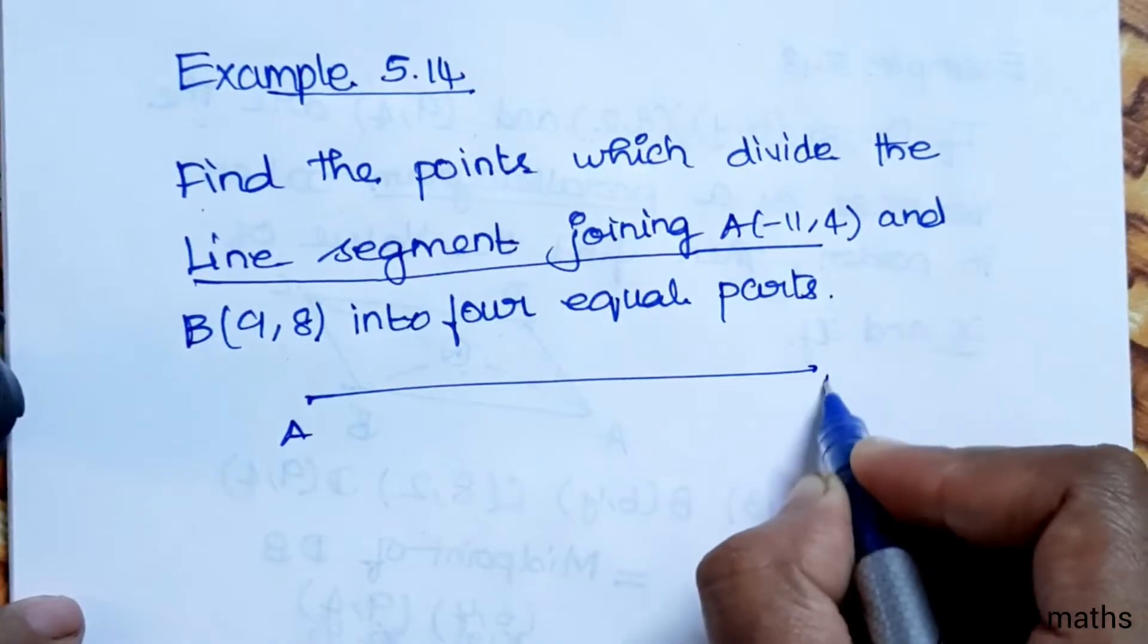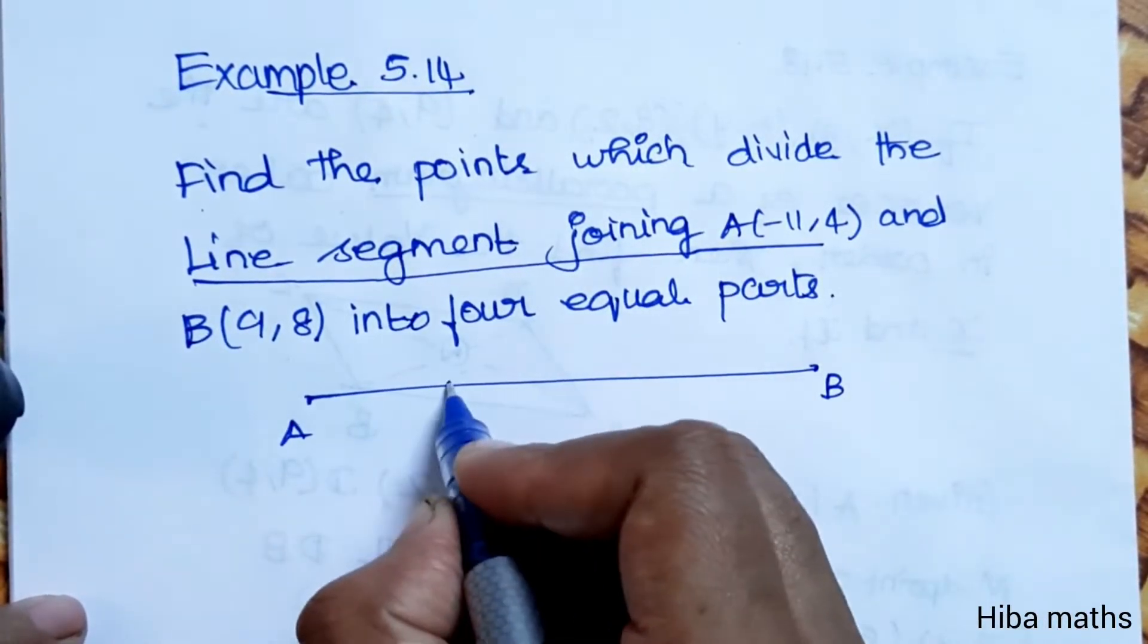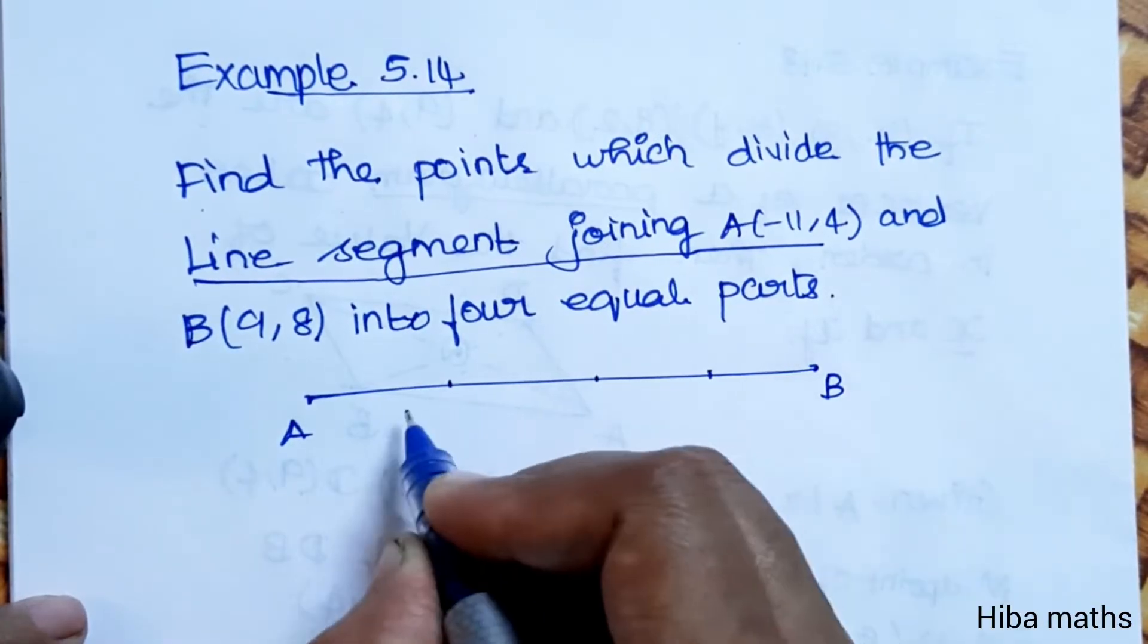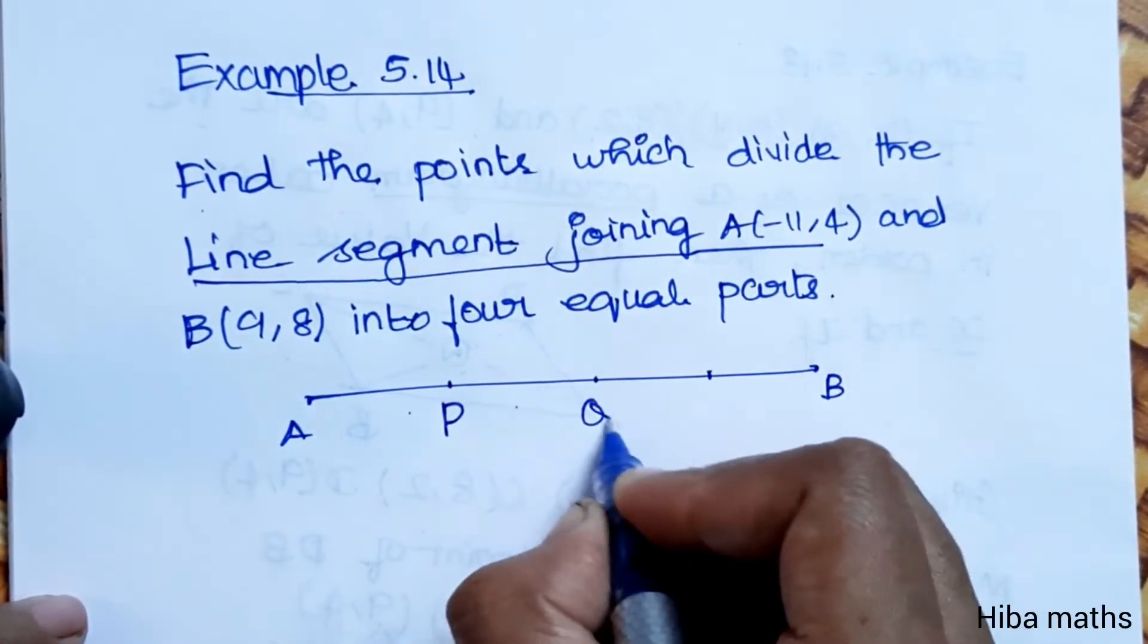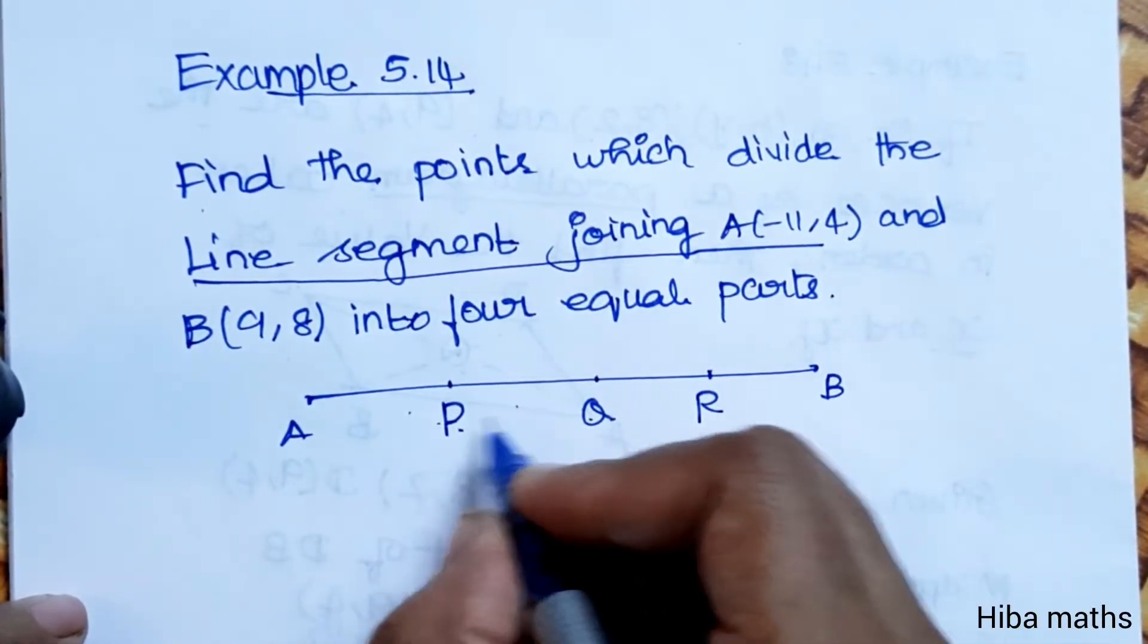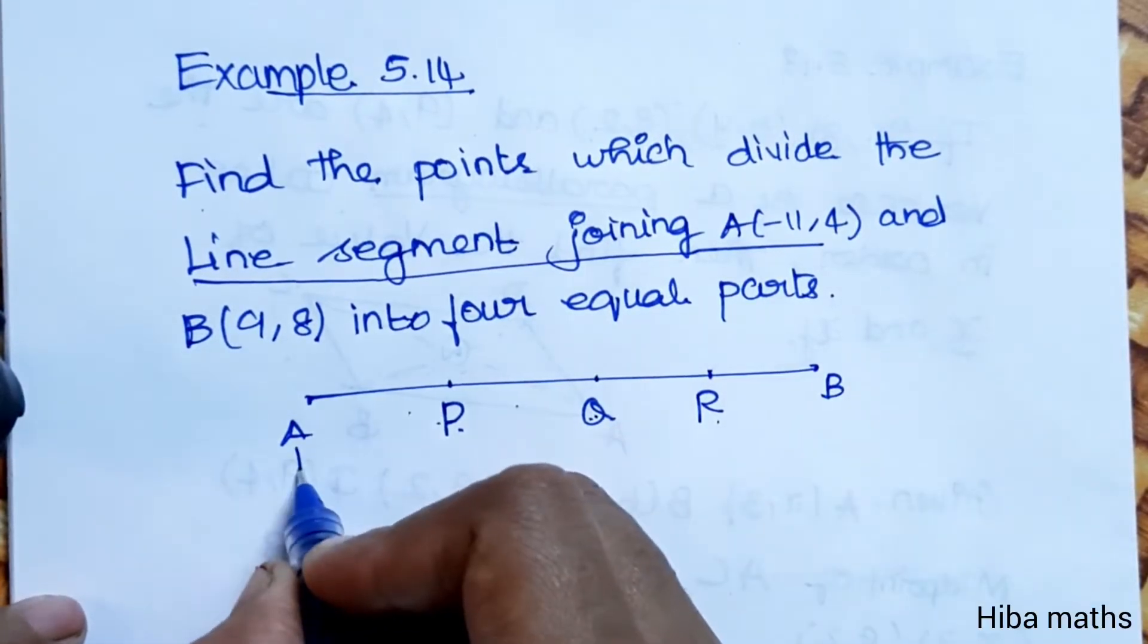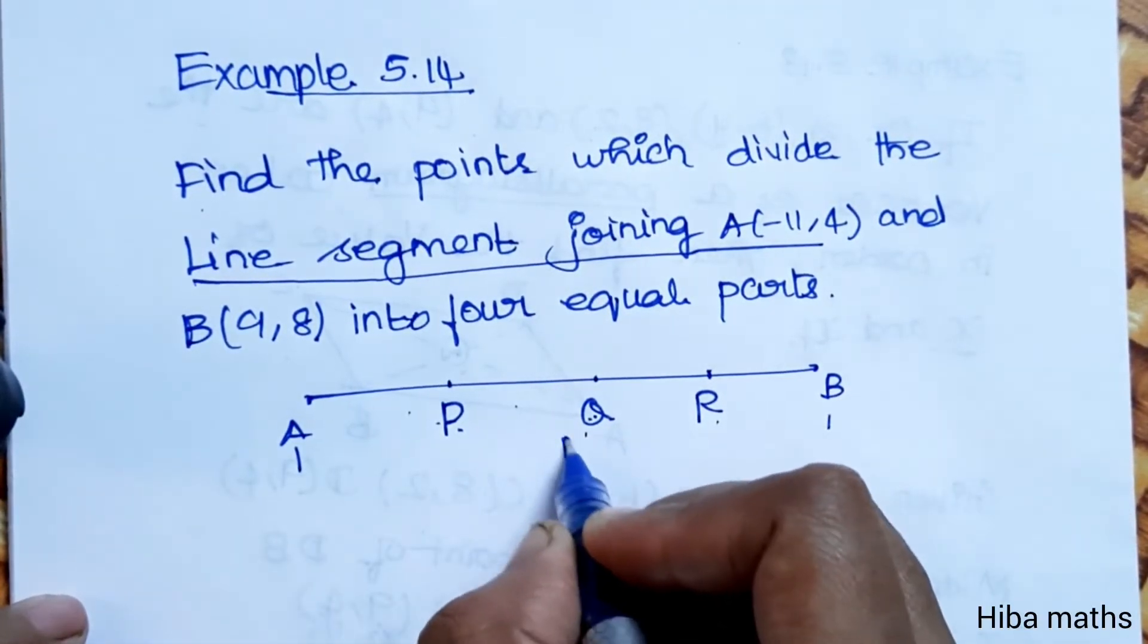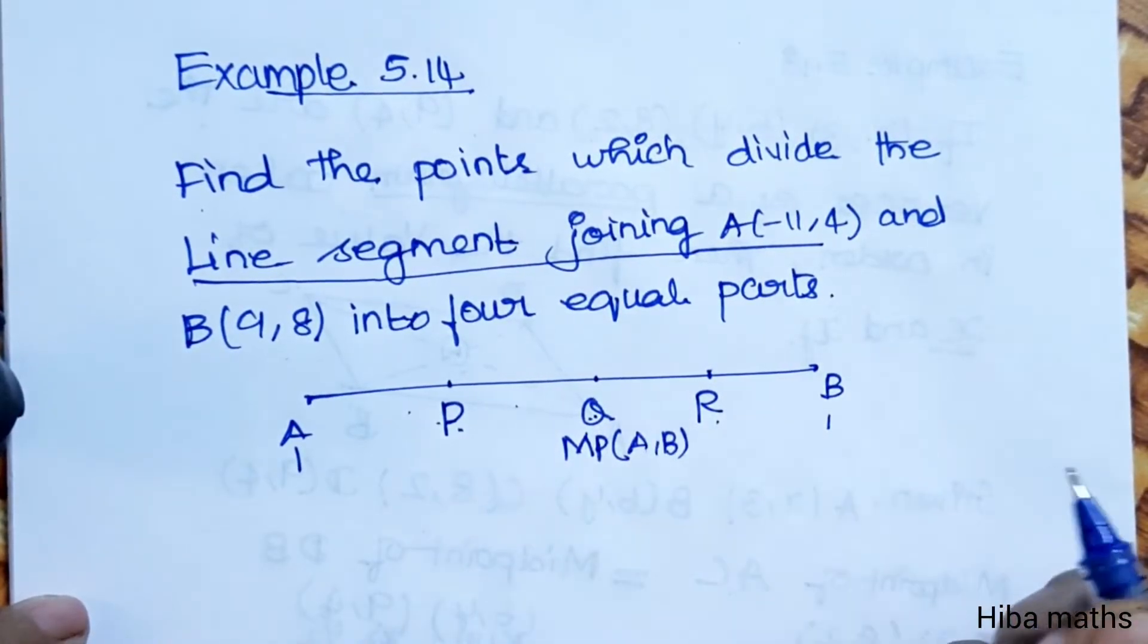AB line is divided into 4 equal parts: 1, 2, 3. Now there are 4 parts. Now I will place the points P, Q, R at the division points.